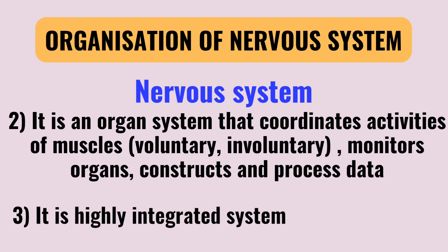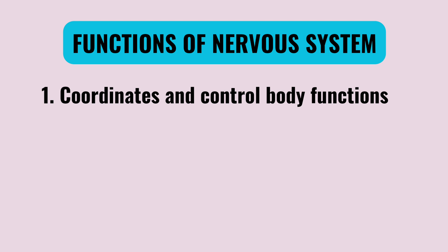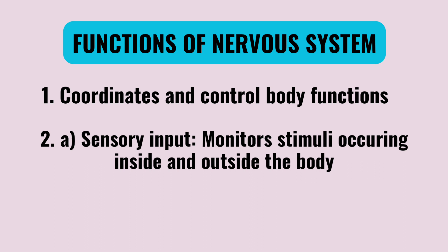This is the general introduction. Now, we are going to look at the nervous system functions. The first function is coordination and control of body functions. The main functions are: first, sensory input — it is a sense or a message that is input.